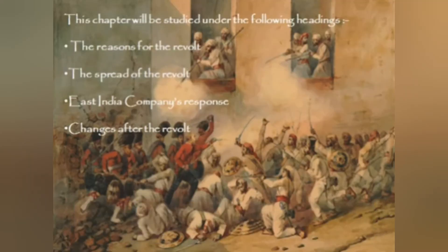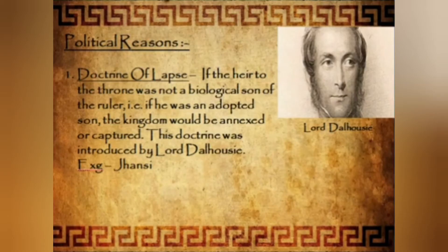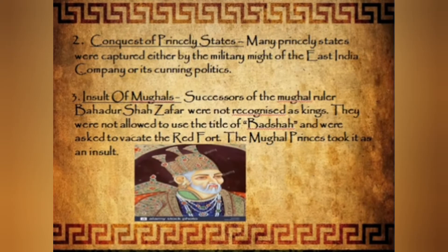There were different causes of the revolt: political, social, religious, military, and others. The political cause may be traced to the British policy of expansion through the Doctrine of Lapse and direct annexation. A large number of Indian rulers and chiefs were dislodged, arousing fear in other ruling families who apprehended a similar fate. Rani Lakshmibai's adopted son was not permitted to sit on the throne of Jhansi. Satara, Nagpur, and Jhansi were annexed under the Doctrine of Lapse; Jaitpur, Sambalpur, and Udaypur were also annexed.